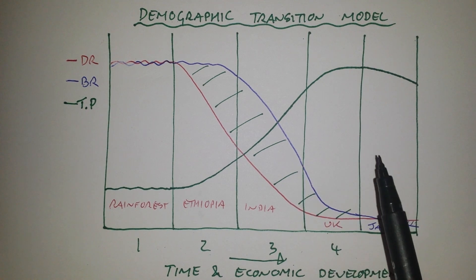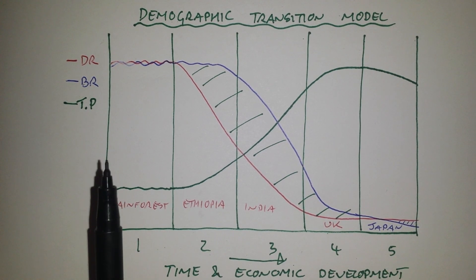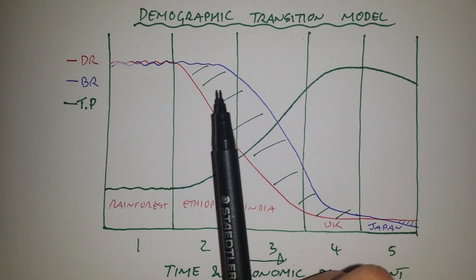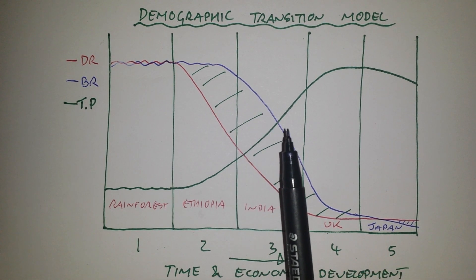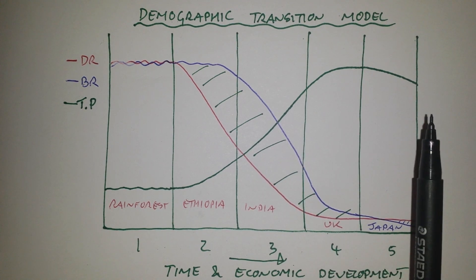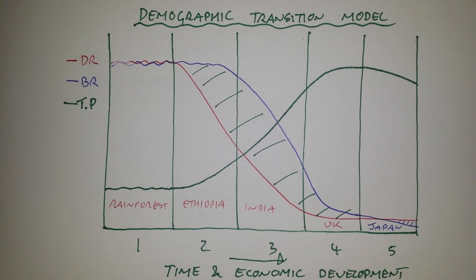So that is the demographic transition model. It shows how population changes over time from primitive societies and LEDCs through to NICs, newly industrialized countries here in the middle, like India and China, through to MEDCs like the UK and finally Japan. So go away and learn it.